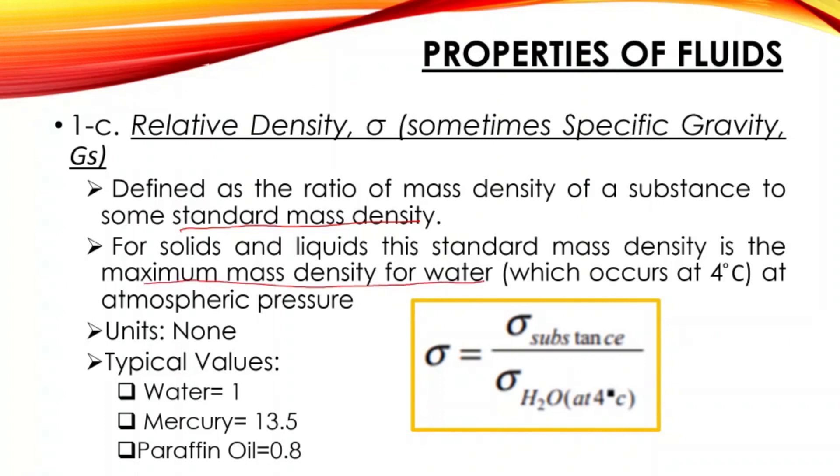The maximum mass density of water occurs at 4 degrees Celsius at atmospheric pressure. This is the normal formula for specific gravity. Some use Gs equals density of the substance over density of water. Also, some use gamma of the substance over gamma of water. It will yield the same answer.